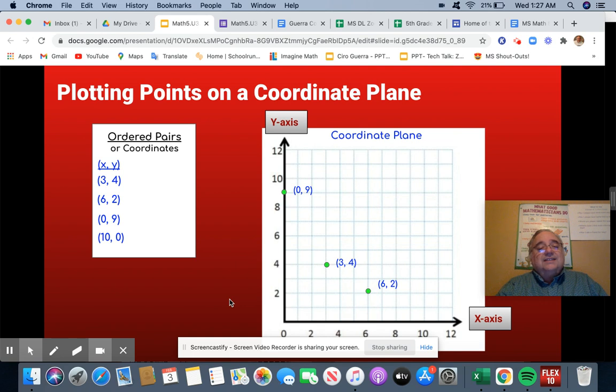The last one is 10, 0. What do we do now? Yes. Excellent. We go to the right 10 spaces, but we stay there for y. We point it, and we mark it, or label it (10, 0).